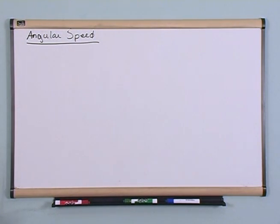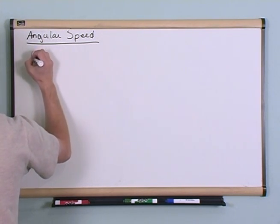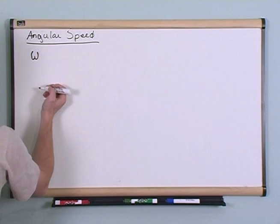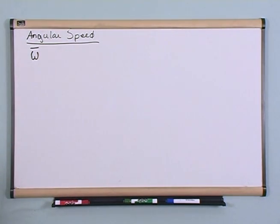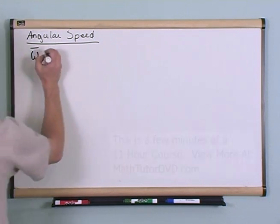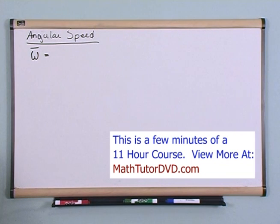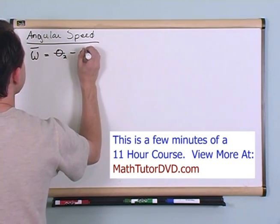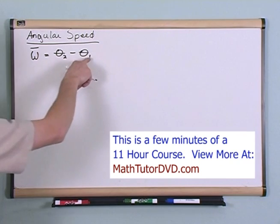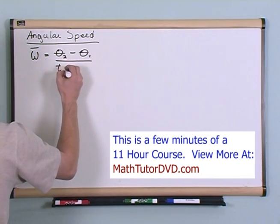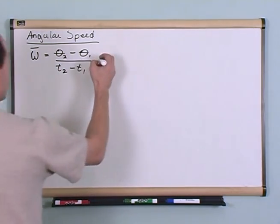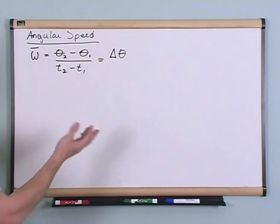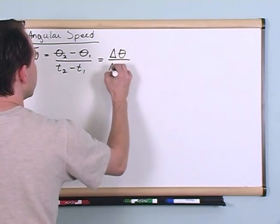The angular speed is always — in every book you'll probably come across — represented by a lowercase omega. I'm going to put a bar over it to indicate this is average angular speed. It's going to be the final angle minus the initial angle, divided by the final time minus the initial time. This is nothing more than the change in the angle — how much did the angle change, delta angle — divided by the change in time, delta time.